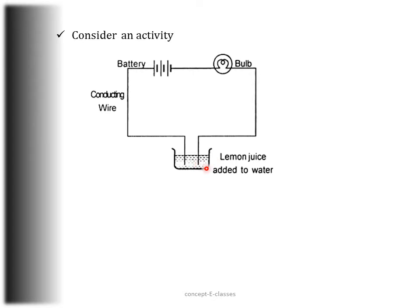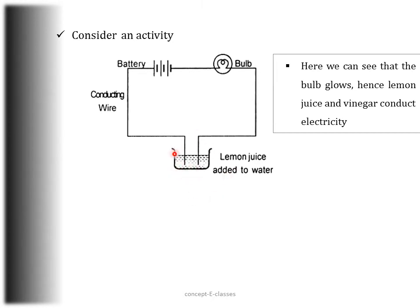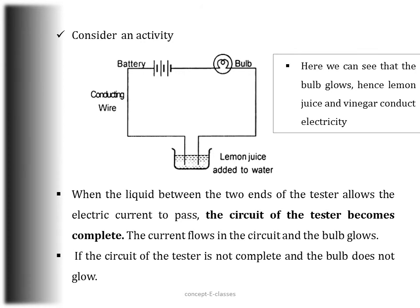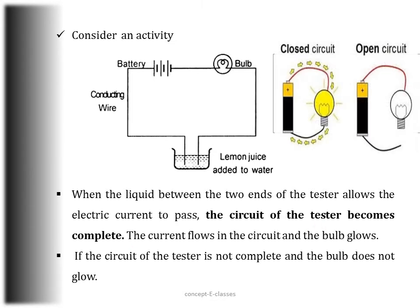What can be observed — will the bulb glow? Yes, the bulb will glow, so lemon juice and vinegar conduct electricity. When the liquid between the two ends of the tester allows electric current to pass through them, the circuit of the tester becomes complete, the current flows in the circuit, and the bulb glows.